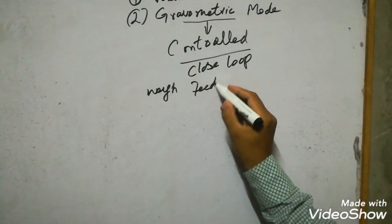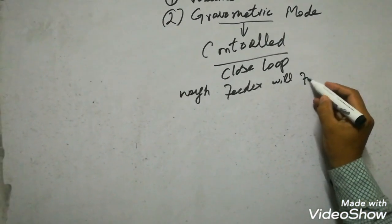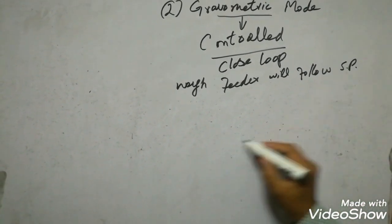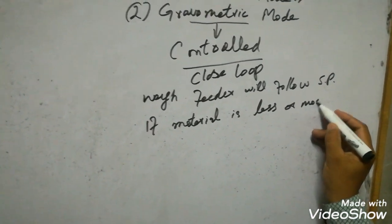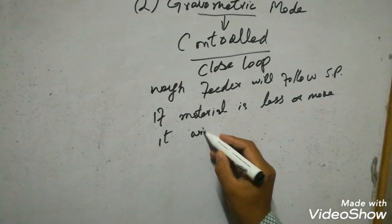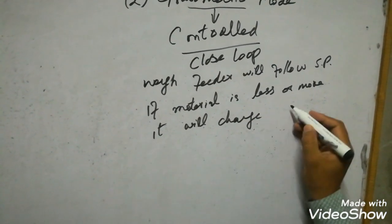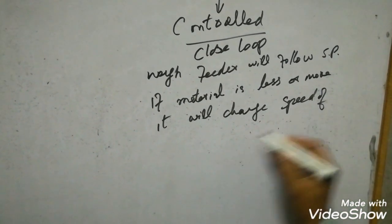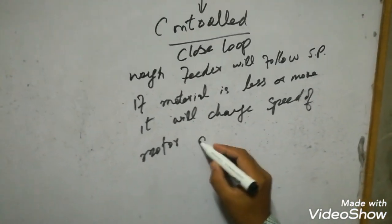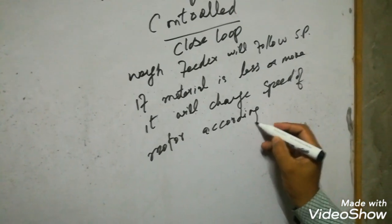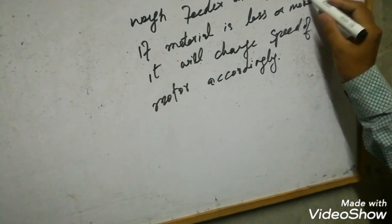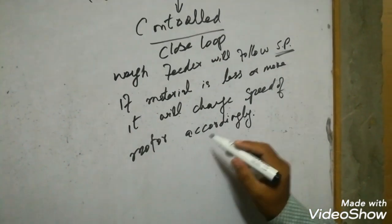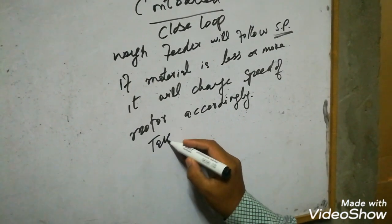As you know, closed loop has feedback. So the wave feeder will follow the set point. If material is less or more at the belt, it will change the set point of the VFD and the speed of the motor will be changed, so it will try to follow the set point as per the operator's set point. This is the controlled mode — normally our wave feeder runs in gravimetric mode.